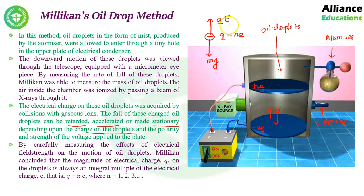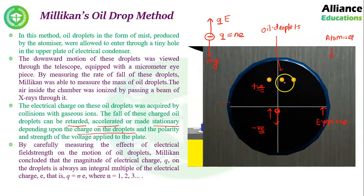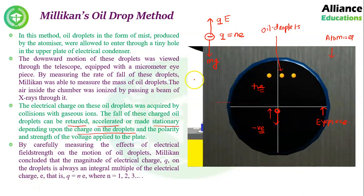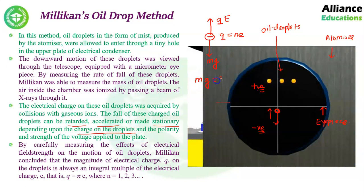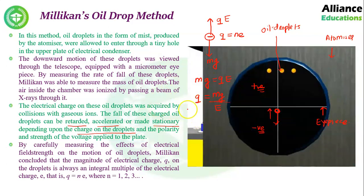Don't worry — we will study all these things gradually. When both forces are balanced, we can write: mg = qE, and from this, q = mg/E. By substituting values in this formula and equating both sides when the drop is stationary, the value of charge was found out.